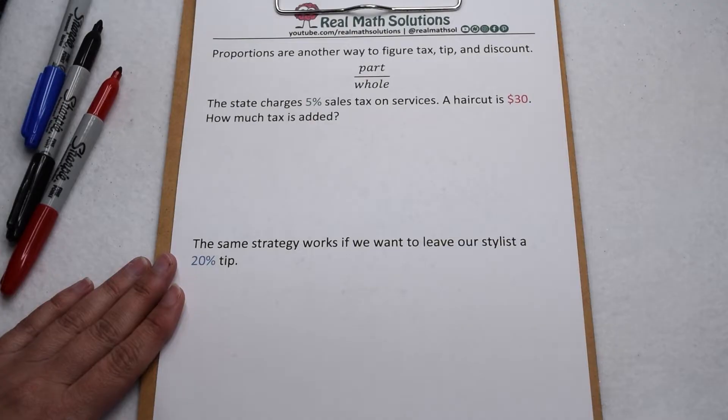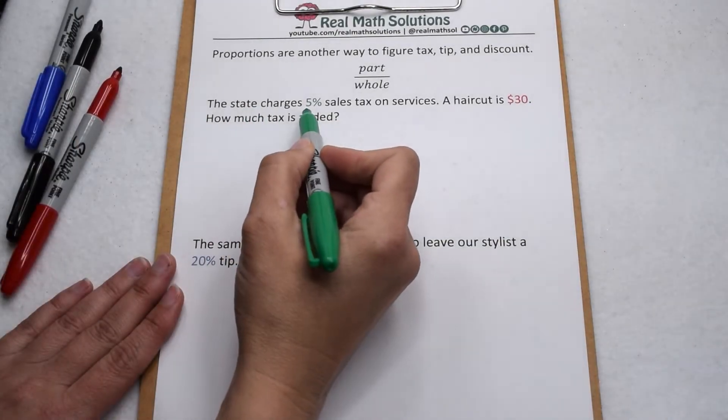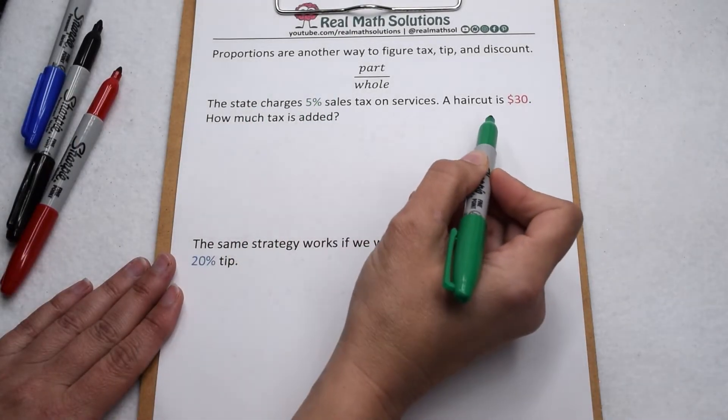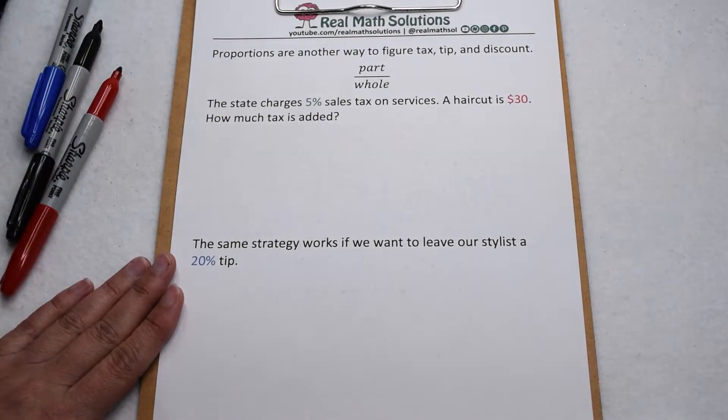Proportions are another way to figure tax, tip, and discount. If we know the state charges 5% sales tax on services and our haircut is $30, how much tax is added?